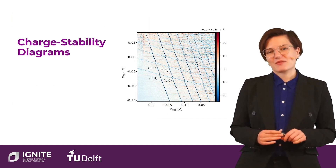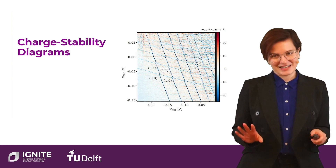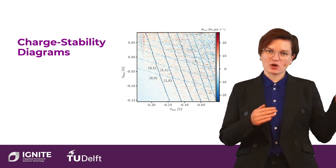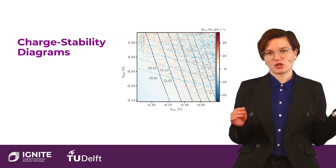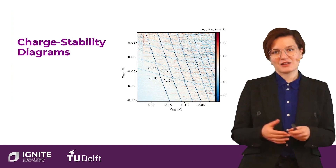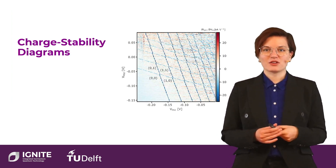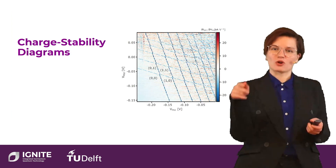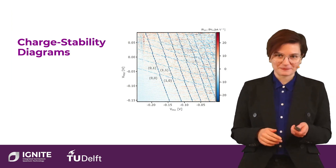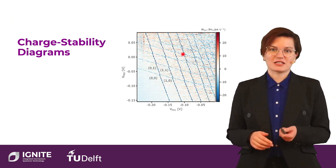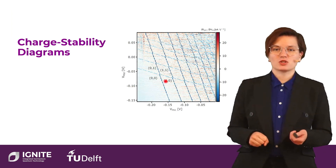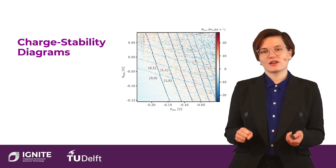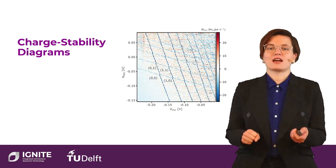Charge stability diagrams have been covered extensively already in this course. They are a 2D mapping where you map your voltages of your plunger gates on the axes, and the color bar gives you the behavior of how the current changes through your device. Whenever you have a big change, you know you made a charge transition in one of your dots. For a double quantum dot, transitioning horizontally changes the charge in one dot, and transitioning vertically changes the charge in the other.